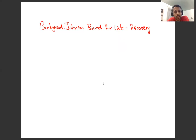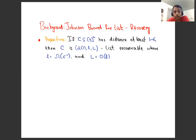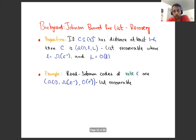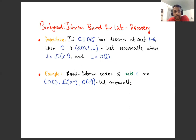Here's some basic background on list recoverability — it's called the Johnson bound. It says that for any code of distance 1 − ε, the code is list recoverable from a constant fraction of errors from lists of size around 1/ε. So if C has distance 1 − ε, it is list recoverable with input list size of order 1/ε and output list that is a linear function of the input list. For Reed-Solomon codes of rate ε this means they are list recoverable from constant fraction errors from list sizes 1/ε.